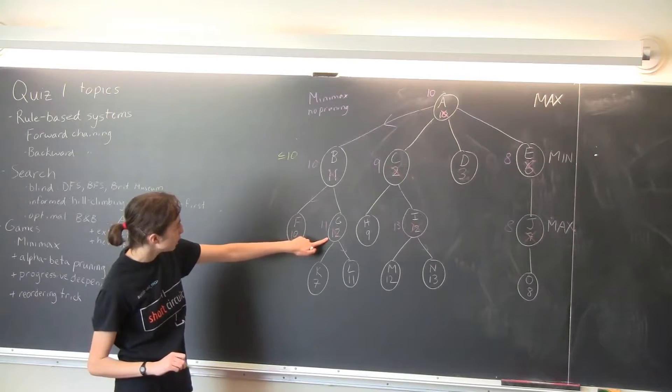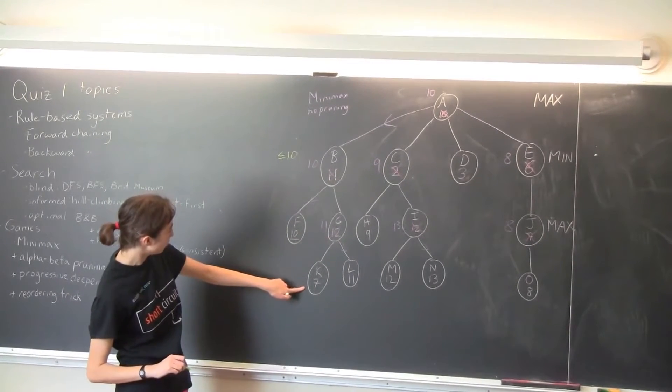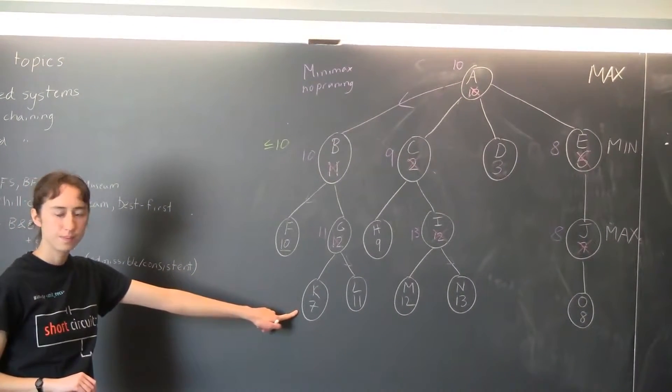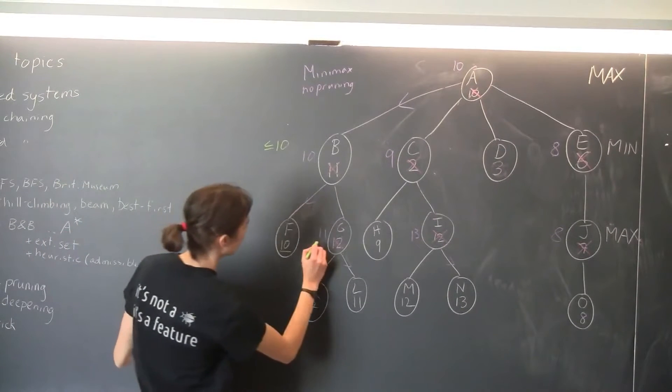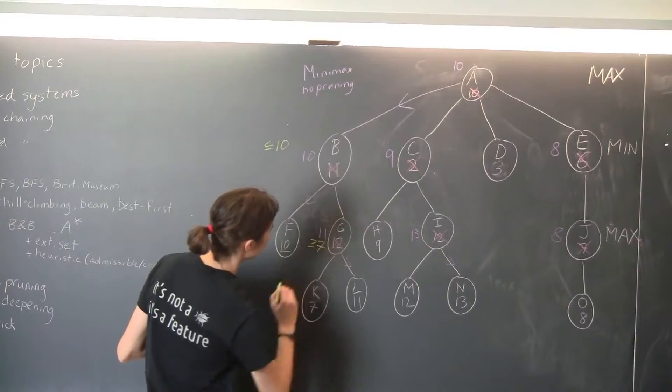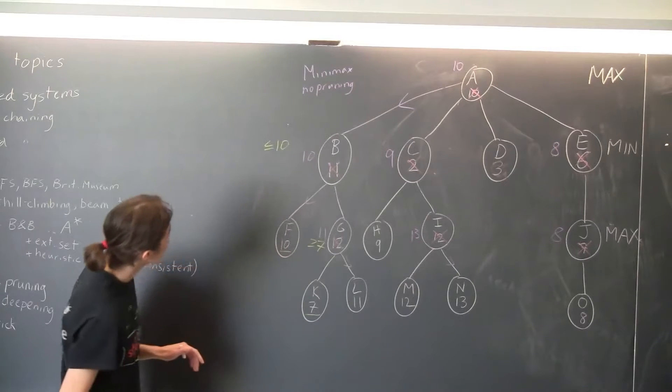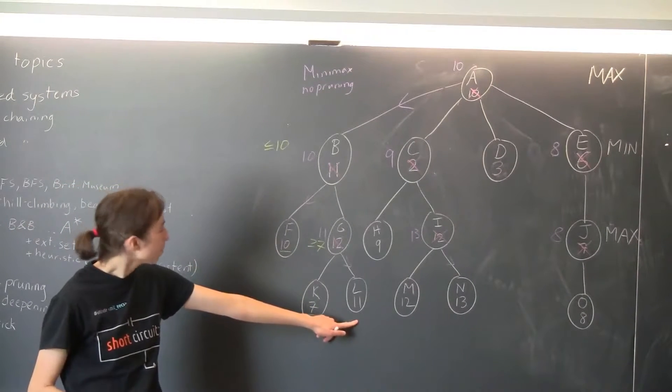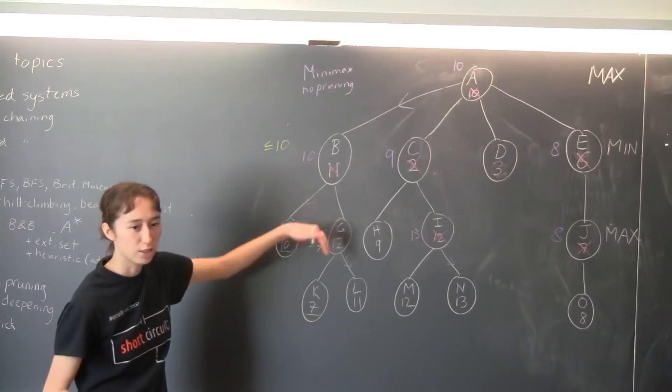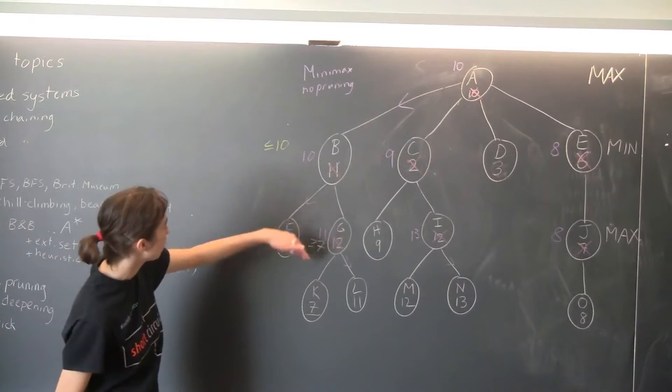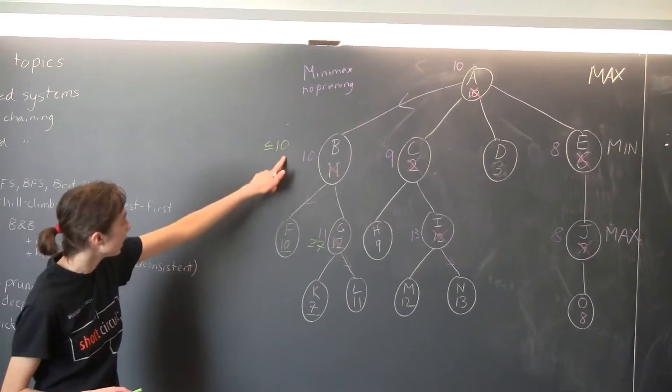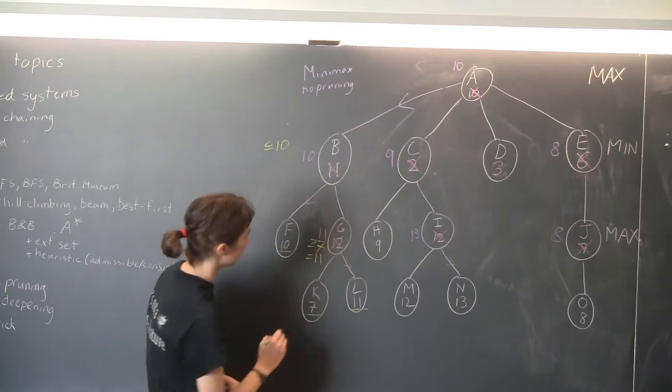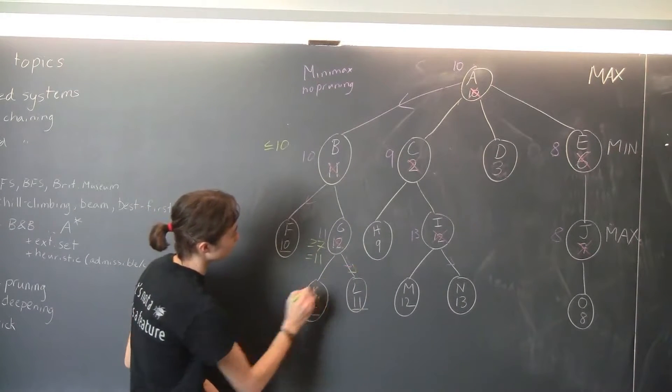Now we're going to go down to G, and it looks like we have to recurse down and look at K. So what does K tell us? Max will get at least 7, because Max wants a higher score. We've evaluated that one. Do we need to evaluate L? Yeah, because we don't know yet whether Max wants to go down this... whether min wants to go down this branch, because 7 could be better than the 10. So we'll evaluate L, and we see that now Max is guaranteed to get a score of exactly 11, because Max will choose to go that way.